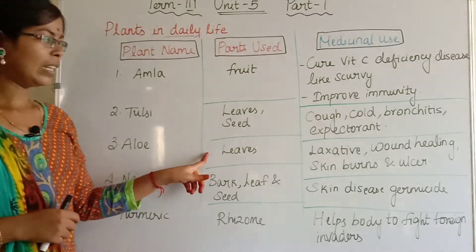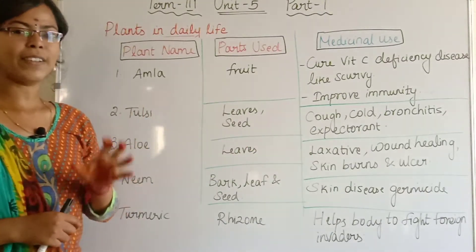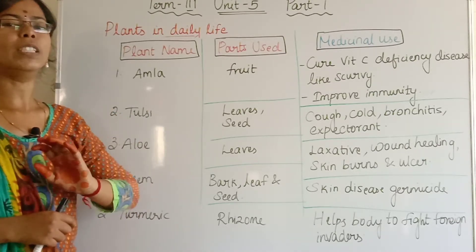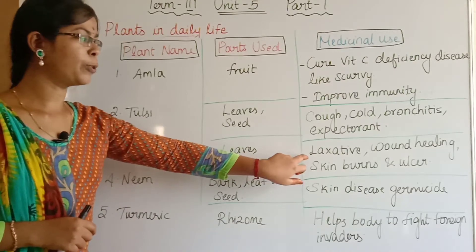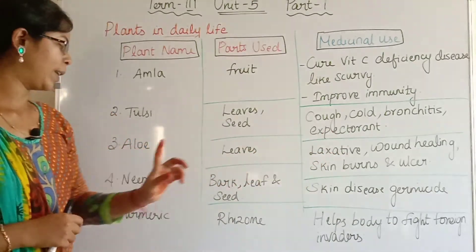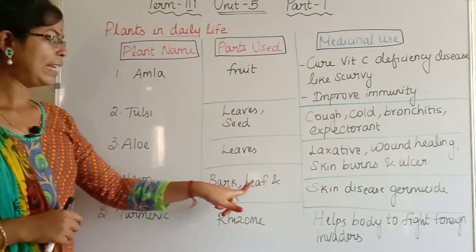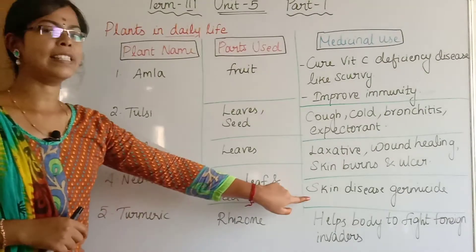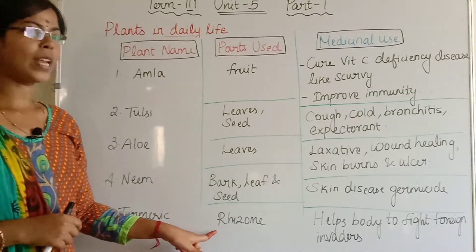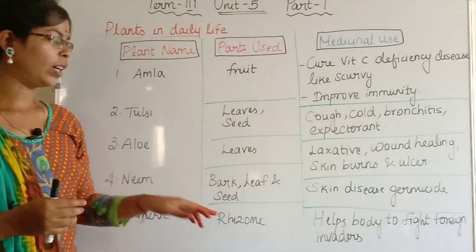Aloe vera (kattralai) — its leaves are used as a laxative to remove solid waste from the body. It is also used for wound healing, skin burns and ulcers. Neem — its bark, leaf and seed are used for skin diseases and as a germicide. Turmeric — its rhizome (an underground modified stem) is used to help the body fight against foreign invaders.